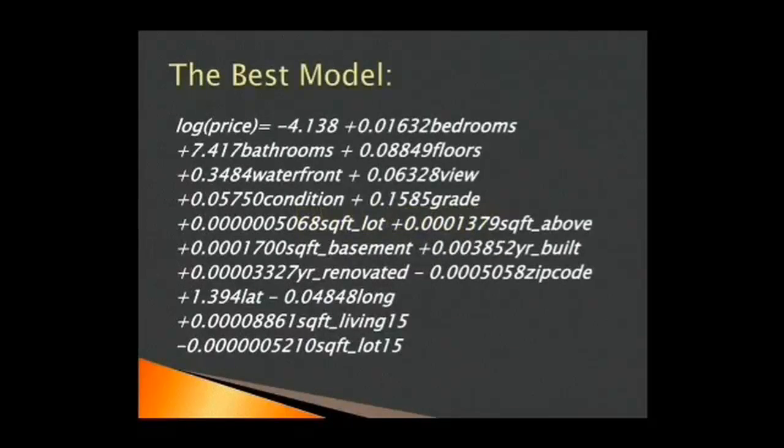This is the best model we could obtain from our analysis. We interpret few of the coefficients in here. Say, for bedrooms, we interpret the log price increases 0.01632 times per bedroom. Similarly, for the next coefficient, we say log price increases 7.417 times per bathroom. In simple words, we say that if a house contains one bathroom, then the log price of that house will increase 7.417 times than the normal.